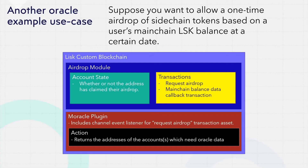Here's another example use case for a blockchain oracle. Suppose you've just released a new sidechain and you want to distribute tokens in a low friction way. A great way to do that is to airdrop them to existing Lisk holders. Previously, you would have had to build a centralized faucet to do that, but with an oracle you can do it right in your app. Like the previous example, it includes a custom module and the Moracle plugin. The airdrop module is very simple. Accounts store a record of whether they have claimed the airdrop or not, and it implements two transactions: one to request an airdrop and another to serve as a callback for the Moracle resolvers to return balance information to.